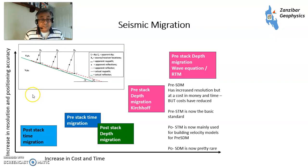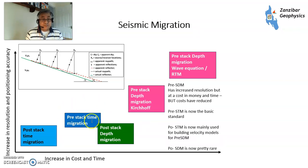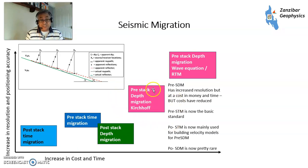Seismic migration is basically a way of processing your data to position reflections in the right place. Initially, migration was developed in the 1960s and 1970s as post-stack in the time domain — okay, but not that accurate due to various distortions and ray path issues. You can move into the pre-stack domain, migrating before you stack your gathers, or migrate in the depth domain. Post-stack depth migration is a little more accurate than time migration but still not ideal.